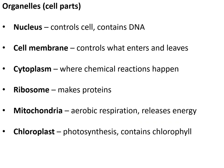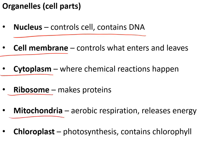The organelles are the parts of a cell. The nucleus controls the cell and contains DNA. The cell membrane controls what enters and leaves the cell. Cytoplasm is where chemical reactions happen. Ribosomes make proteins. Mitochondria are where aerobic respiration happens to release energy, and chloroplasts are where photosynthesis happens.